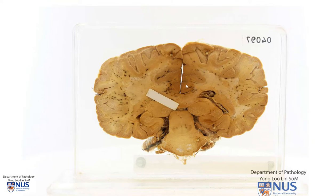In summary, we have here a coronal section of the brain showing multiple petechial hemorrhages in the white matter, and this is an example of cerebral malaria. Thank you.